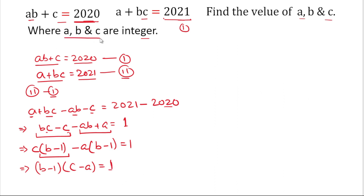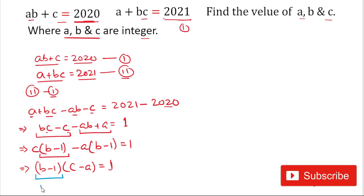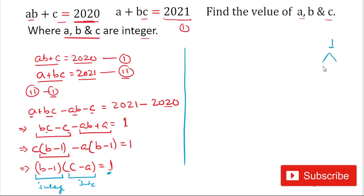Since the problem states that a, b, and c are integers, both (b minus 1) and (c minus a) must also be integers. We need to factorize 1 into two integer factors. The only possibilities are: (1) times (1) = 1, or (minus 1) times (minus 1) = 1. So we have two cases to consider.